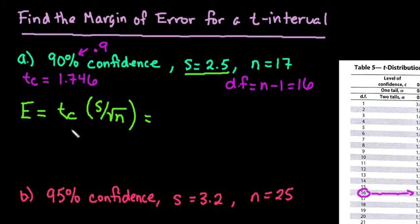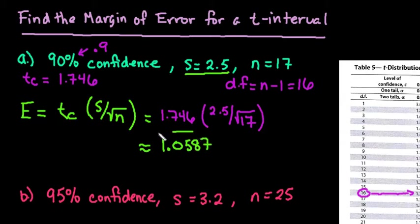Okay, and now we have all of the information that we need in order to just plug it into our calculator. So we would put in our tc, which is 1.746. And then we would take our s, which is 2.5, and we would divide it by the square root of 17. And we would plug that into our calculator. As far as rounding goes, it just depends on the situation. A lot of times I will round this to 3 or 4 decimal places. I went ahead and wrote it down as 4, so I'll just go ahead and give it to you guys as 4. So 1.0587 is what this rounds to.